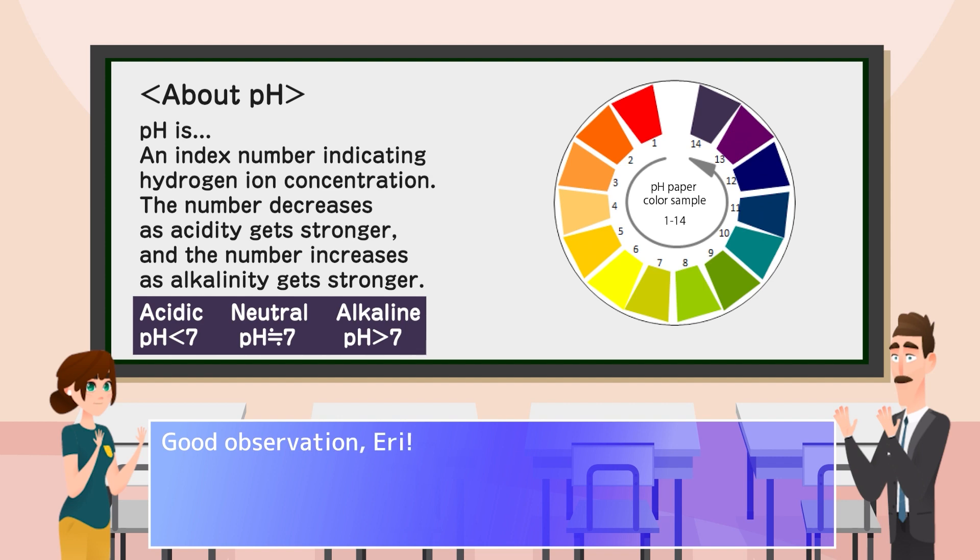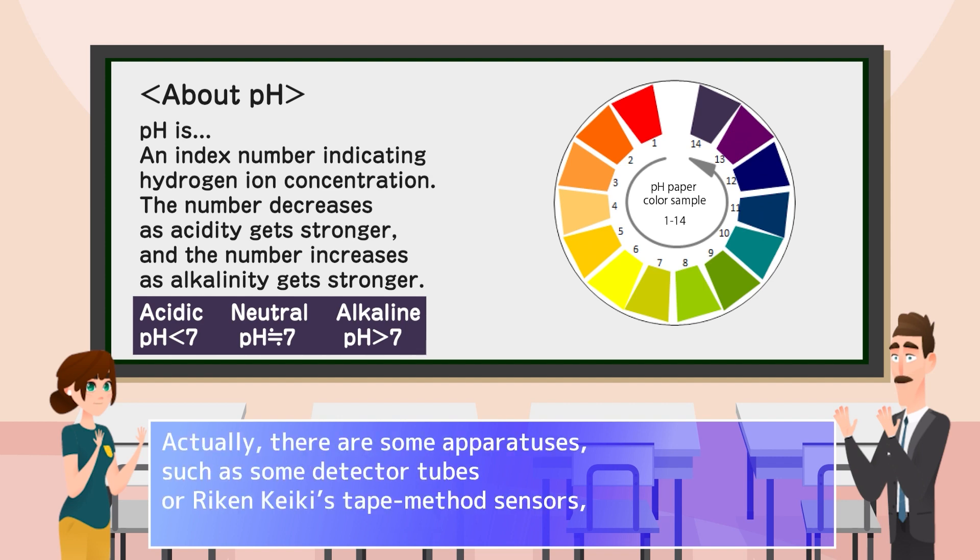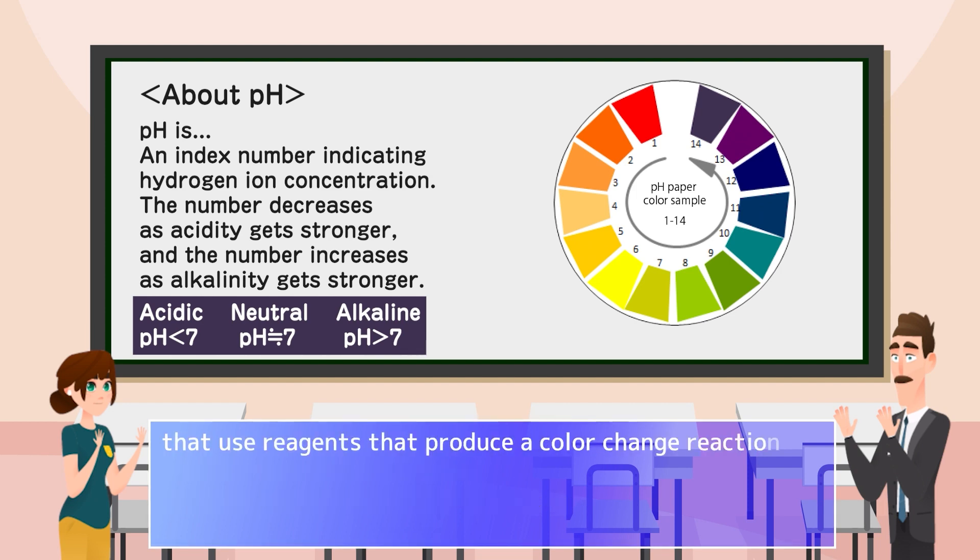Good observation, Aerie. Actually, there are some apparatuses, such as some detector tubes or chemical tape method sensors, that use reagents that produce a color change reaction when exposed to acidic or alkaline substances.